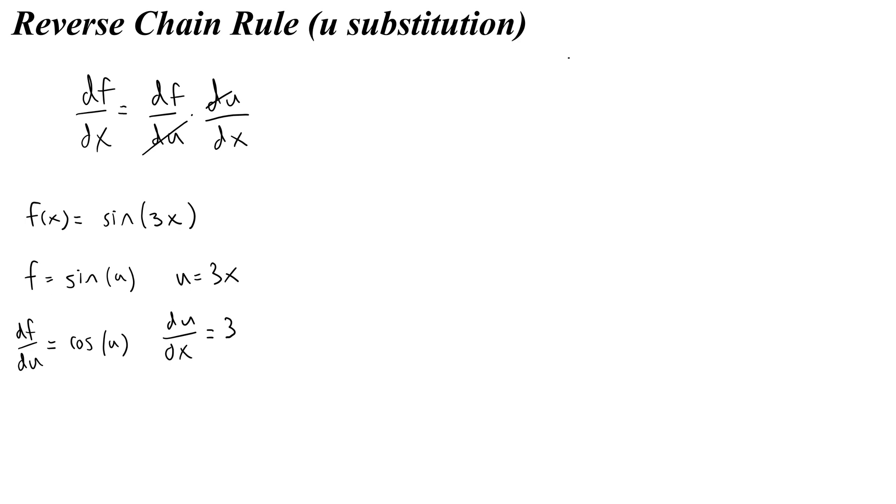So when I do that, I would say the derivative of f with respect to x is cosine of u times 3, which then I would replace that u with 3x, and now I've taken the derivative using the chain rule.